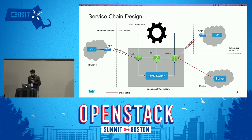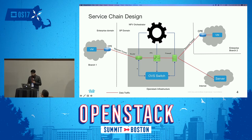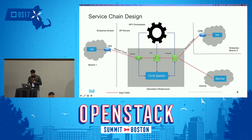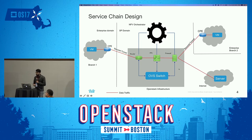Now I'll discuss the current service chain design. There are a couple of enterprise branches, and in between there is a service provider domain with an internet connection. In this domain there is an OpenStack infrastructure on which NFVs are created, like a router, IPS, or a firewall, controlled by an NFV orchestrator. A packet coming out of a branch to the internet goes via all these devices one by one — this chain is called a service chain. Traffic from a branch to the service chain is always encrypted in a secure tunnel, and when it goes out to the internet it is unencrypted. It is the duty of these service chains to identify and handle security threats.